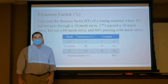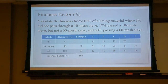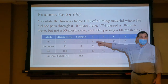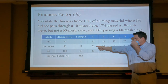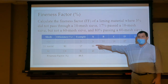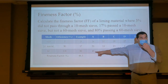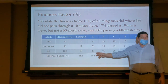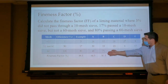So our fineness factor is 88.5%. For example: 16% didn't make it through the 10-mesh sieve — bad, throw it out, it doesn't count. Half of 39% made it through the 10-mesh but not the 60-mesh — that's 19.5% effective. And 45% that made it through both sieves is 100% effective. Our total fineness factor would be 64.5%, calculated by adding 19.5 and 45. You would continue to do that for each liming material.